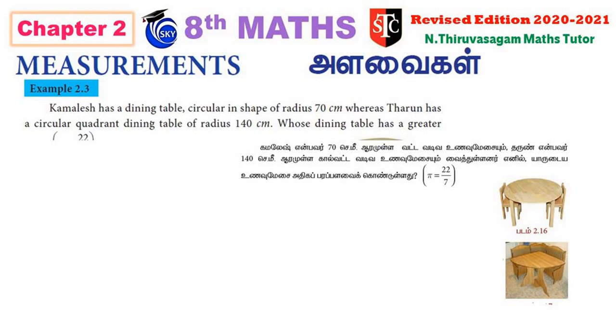The question is: Kamalesh has a dining table circular in shape with radius 70 cm, whereas Tharun has a circular quadrant dining table with radius 140 cm. Whose dining table has greater area?